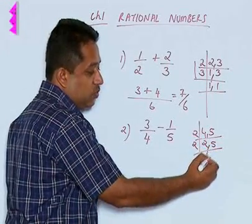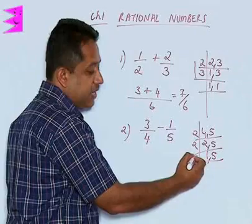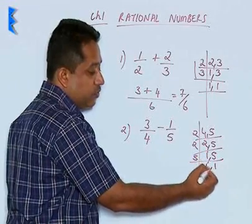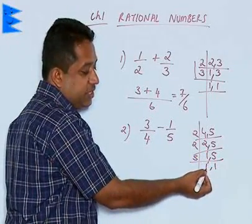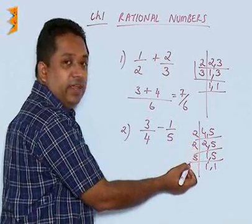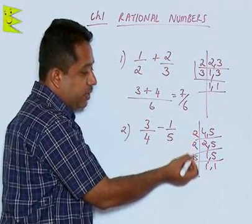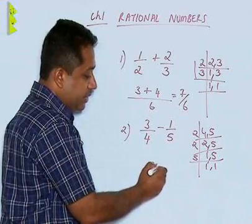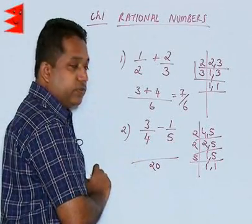Then 2 times 1 is 2, 5 remains as it is, and then finally, 5 goes. The process is finished here because we are left with 1 and 1. Now, you find the factors are 2 into 2 into 5, so 2 into 2 into 5 becomes 4 into 5 that is 20. We are getting the LCM as 20.